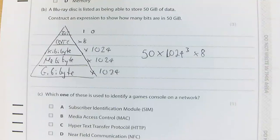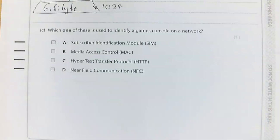To get down to bits, I need to multiply by 1024 at each level. When I get down to bytes, I need to multiply by 8, because there are 8 bits in a byte.